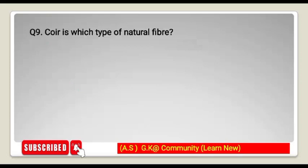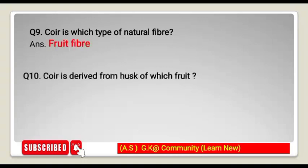Next question: coir is which type of natural fiber? Coir is a fruit fiber. Next question: coir is derived from the husk of which fruit? It is the coconut fruit.